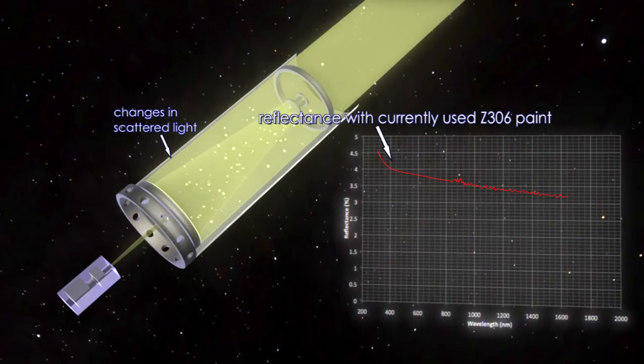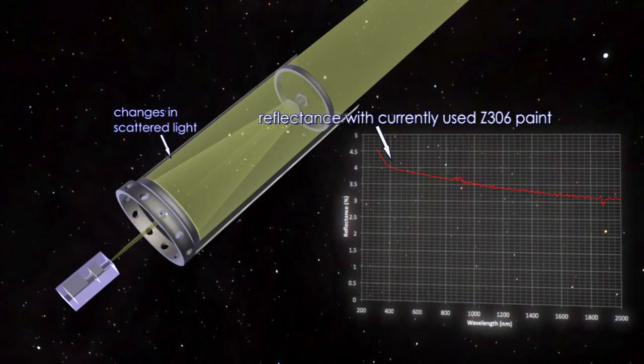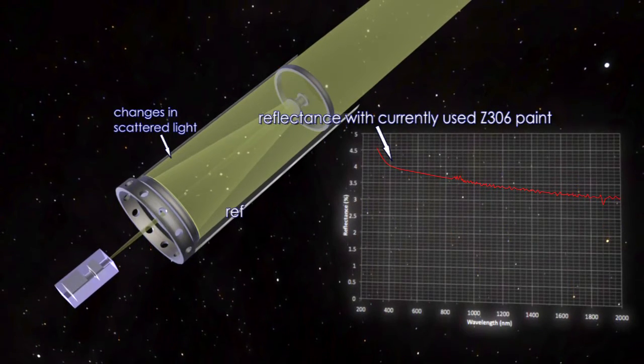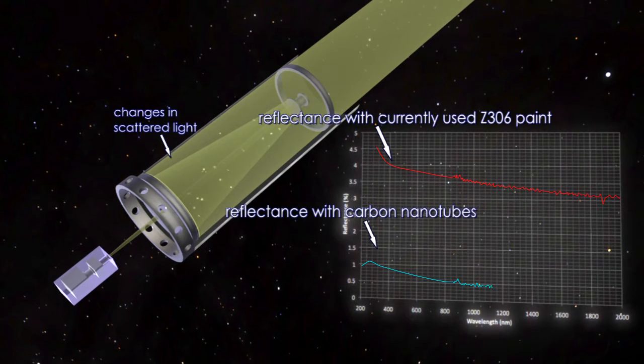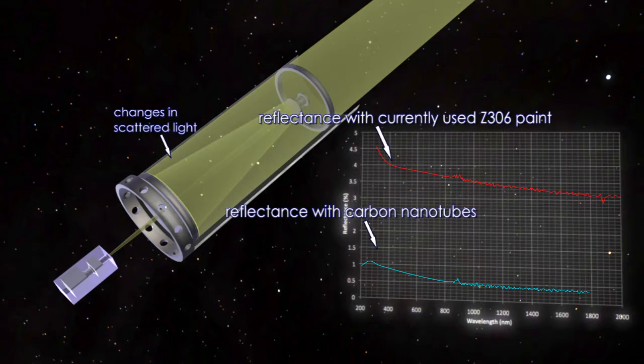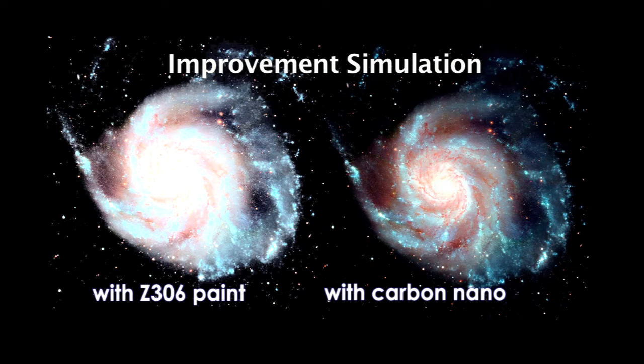So the current telescopes use black paint to reduce the reflection. But the black paint isn't perfect. It still shows a reflection. Over the course of our work, we were able to optimize the carbon nanotubes to make them ten times darker than the paint. You could get a better observational efficiency. You're not throwing away 40% of your data.